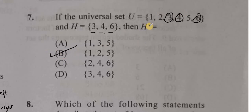So H complement really means elements in the universal set that are not a part of set H.